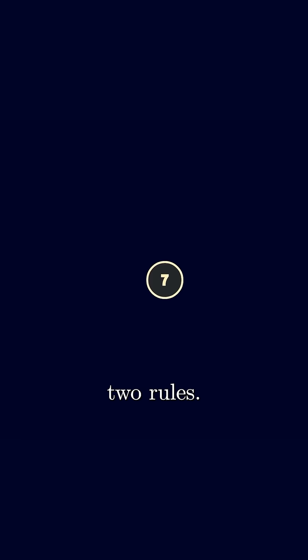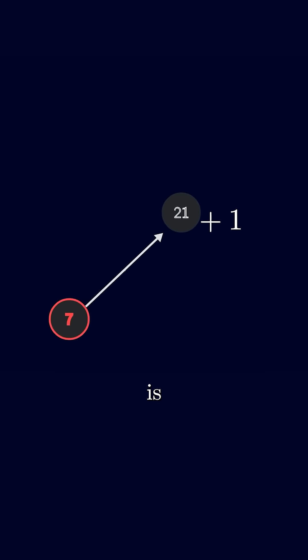We're gonna apply two rules. If the number is odd, we multiply by three and add one. Three times seven is 21 plus one is 22.